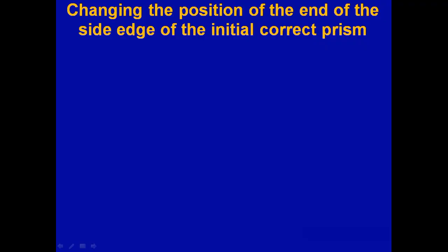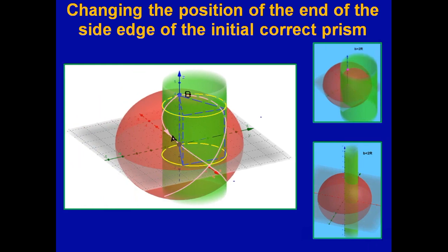During the work, we investigated changing the position of the end of the side edge of the initial correct prism. So, for right prism, if the length of the lateral edge b is fixed, and the length of the lateral edge is equal to the diameter of the circle described around the base,